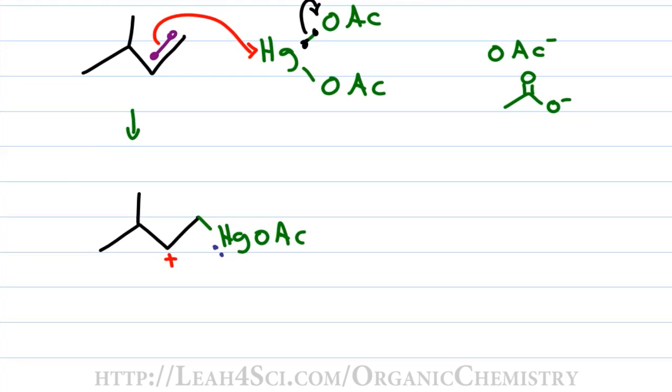Remember in the last video we called mercury the carbocation babysitter because it immediately attacks that carbon and doesn't allow for a carbocation rearrangement. We show what this looks like in the next step where HgOAC is bound to that primary carbon but now we have a second bond from mercury to the secondary carbon with a positive charge on our mercurinium ion.